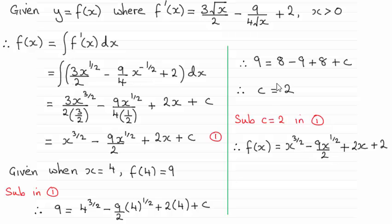And then simplifying that, remember 4 to the power 3 over 2 is going to be the square root of 4, which is 2, and then you cube it. So that's going to give me that 8 there. So I get my equation here. I can work this out for c, which turns out to be 2. Sub that back into equation 1.